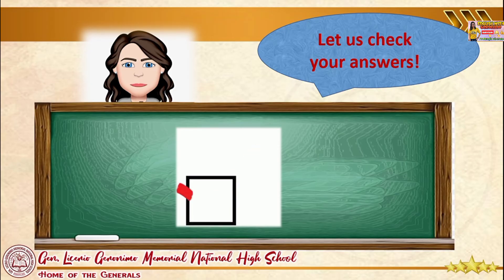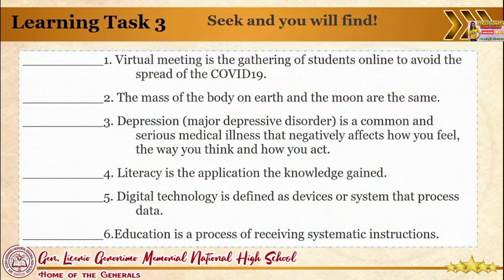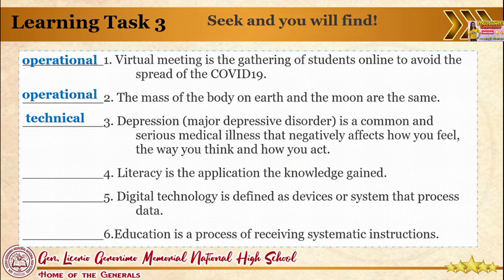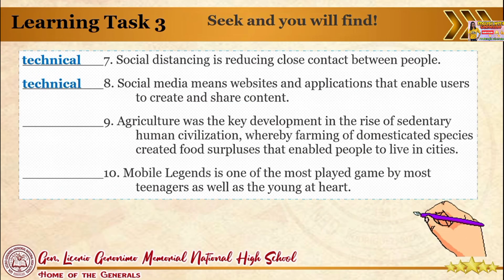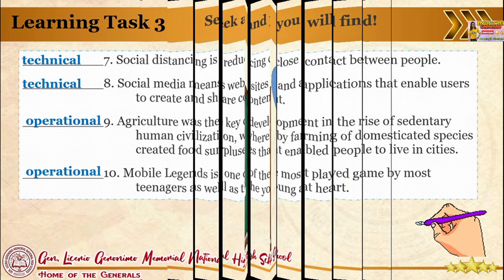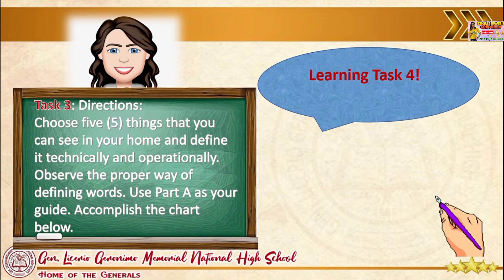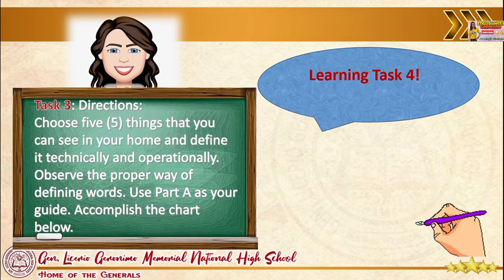Let us check your answers. Great job! Learning Task Number 4 directions: choose 5 things that you can see in your home and define each technically and operationally. Observe the proper way of defining words. Use Part A as your guide and accomplish the chart below.